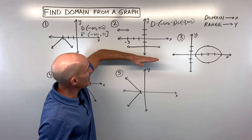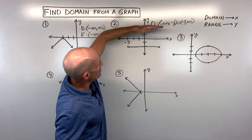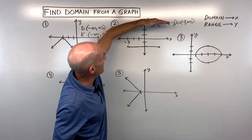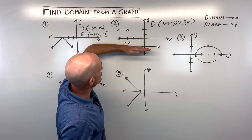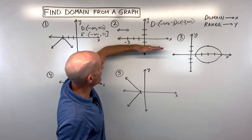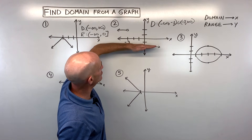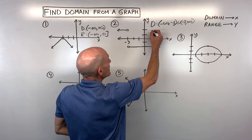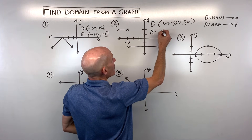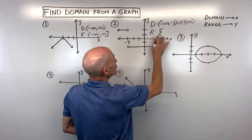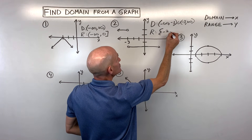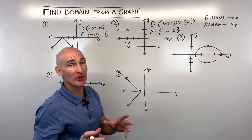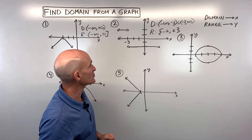For the range, those are the y values, so I scan from low to high. Because these are horizontal lines, the y values can only be negative two and positive two — it's really just those two numbers. So instead of writing an interval, I use set bracket notation: {-2, 2} with curly brackets. Those are the only y values.